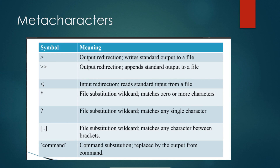The less-than symbol '<' is for input redirection — it takes input from a file. The asterisk '*' is a wildcard used for file substitution, also used in regular expressions. The question mark '?' matches any single character. Square brackets '[]' are used for grouping characters or specifying a range.